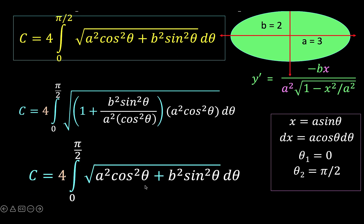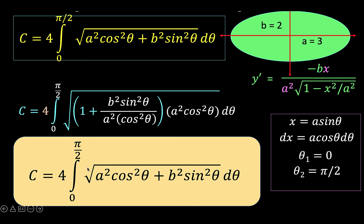This resulting equation is exactly the formula we set out to prove. Ladies and gentlemen, we have just proven that the formula for the circumference of an ellipse is C equals 4 times the definite integral from 0 to pi over 2 of the square root of a squared cosine squared theta plus b squared sine squared theta d theta, where a is one half the length of the major axis and b is one half the length of the minor axis. Thank you very much — this is Lando Assistant, and we'll see you again in our next video.